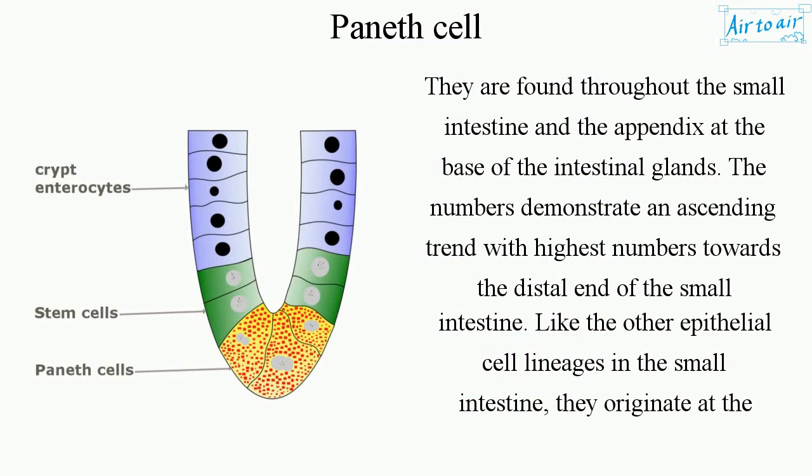Paneth cells are found throughout the small intestine and the appendix at the base of the intestinal glands. The numbers demonstrate an ascending trend, with the highest numbers towards the distal end of the small intestine.